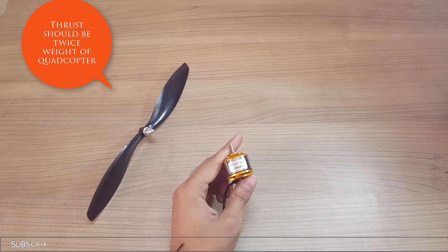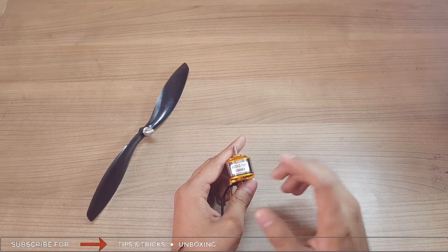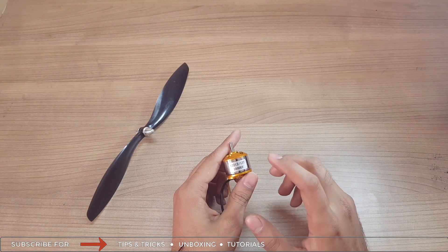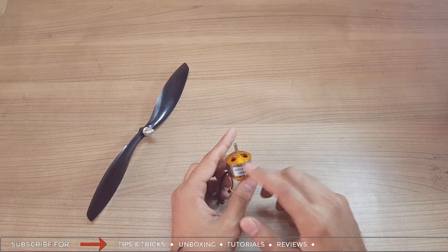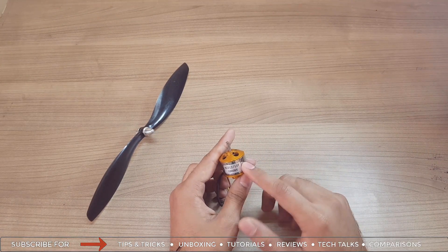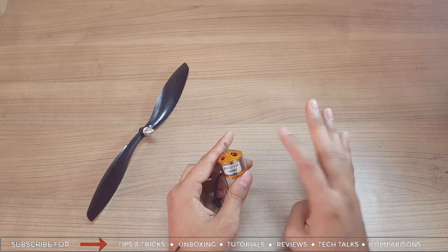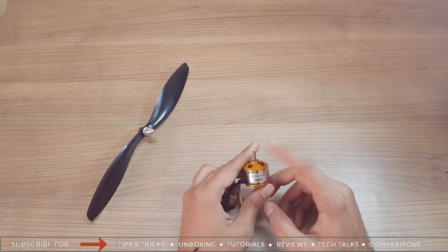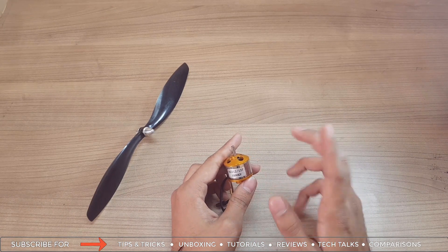The specifications about these motors will be written on a sheet when you purchase them. If it is not written, I'm sure that I've tested they can generate 500 grams of thrust. We are using 4 motors, so it equals 2 kg, which is sufficient for these types of quadcopters.